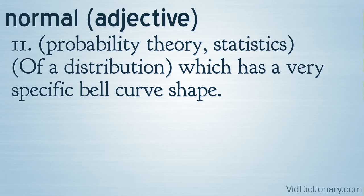Definition 11: Probability theory, statistics — of a distribution, which has a very specific bell curve shape.